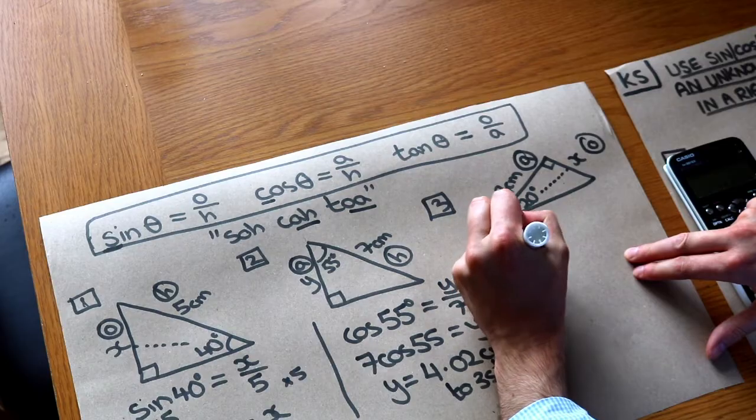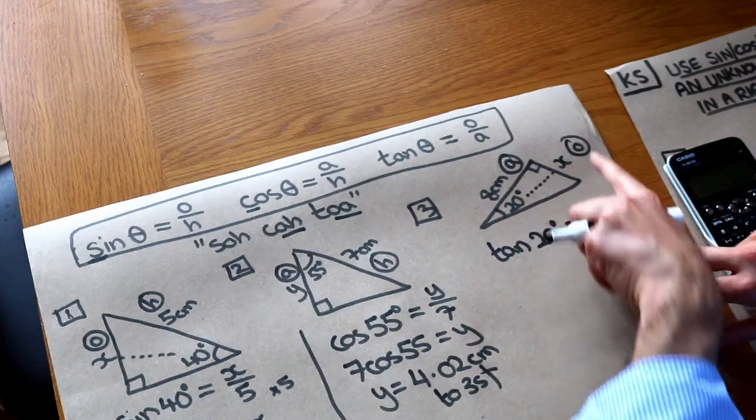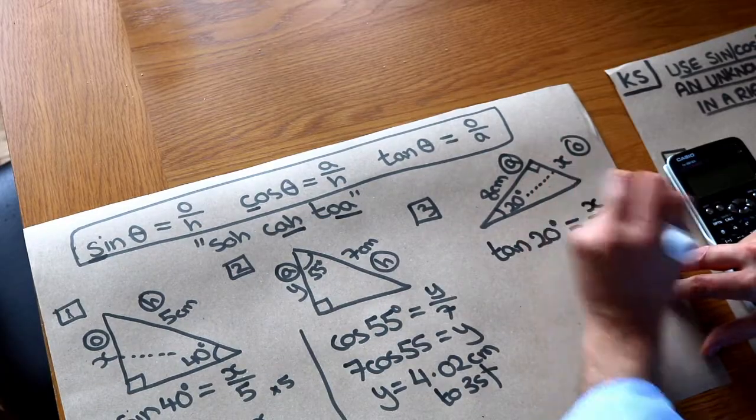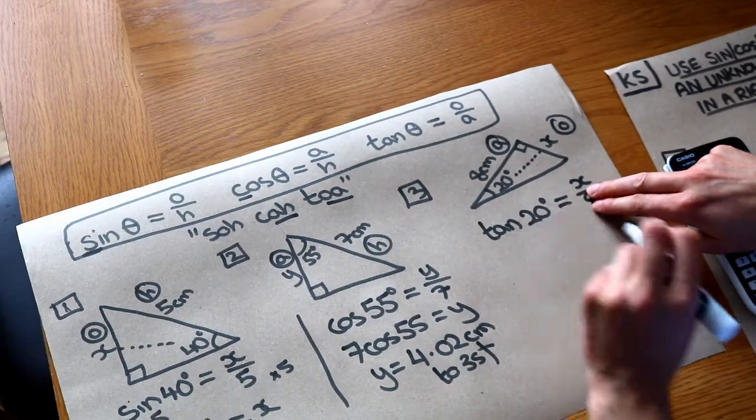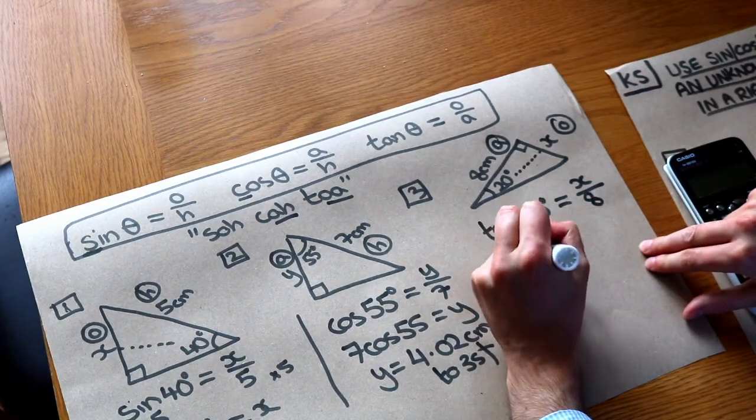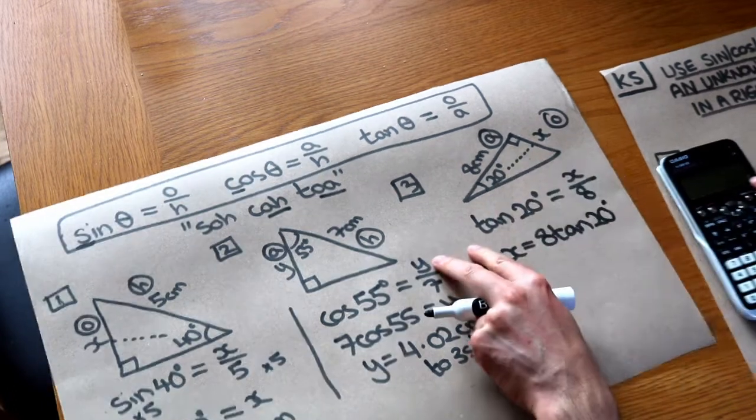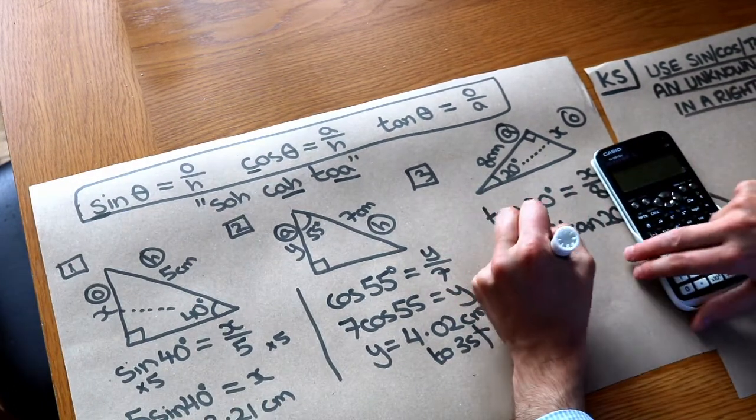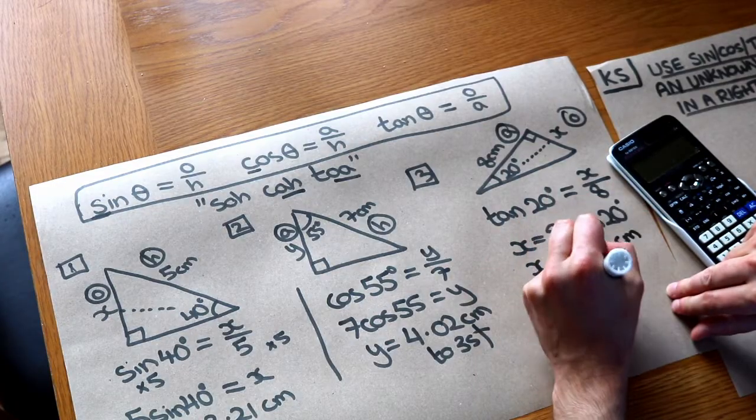So we're going to use this one here. So tan of theta which in this case is 20 degrees is equal to the opposite X over the adjacent 8. Again to get rid of that divide by 8 we times both sides by 8. So X is 8 tan 20. And then put it on our calculator and that gives us 2.91 centimeters to 3 significant figures.